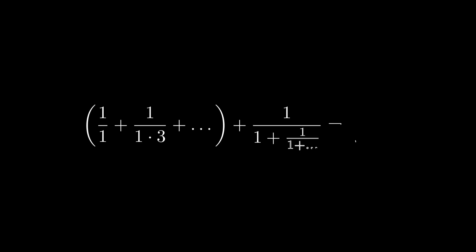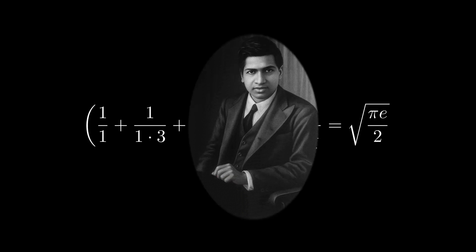Finally, we conclude the sum of the infinite series and the continued fraction equals the square root of pi e over 2. A profound identity from the mind of Ramanujan.